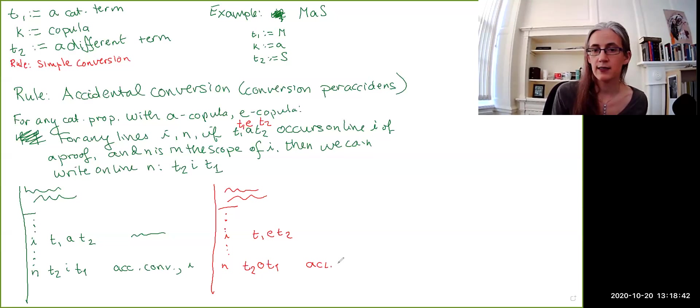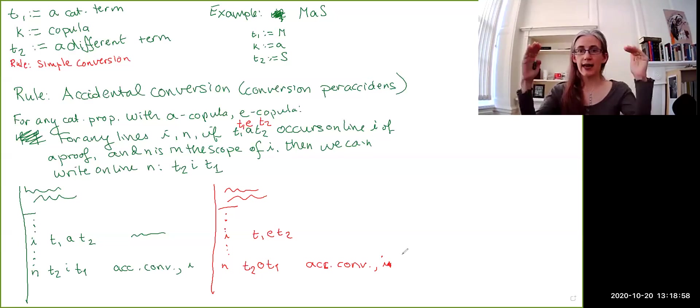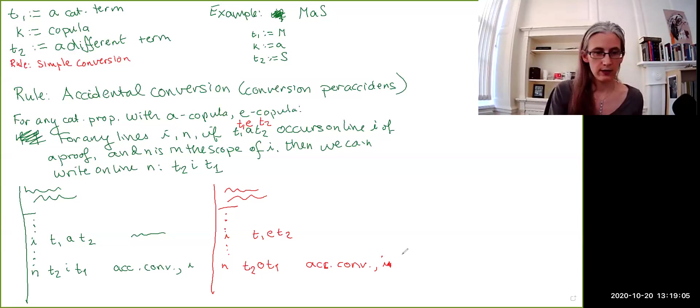This is, again, going to be accidental conversion citing line I. So, if you have a universal copula, you can apply accidental conversion. You get the A's turning to I's, the E's turning to O's, and at the same time, you swap the order of the terms. So, here is our second transformation rule. This is the rule of accidental conversion.